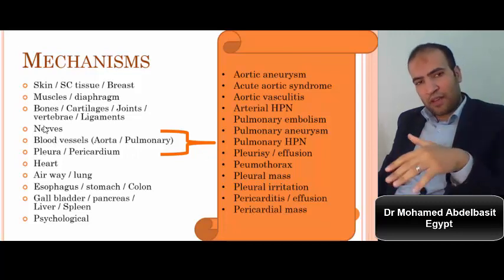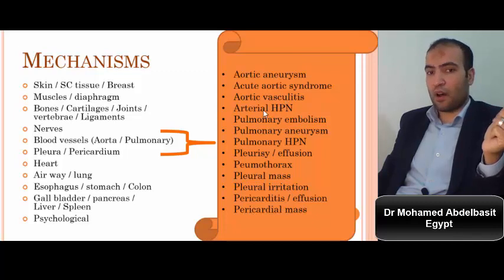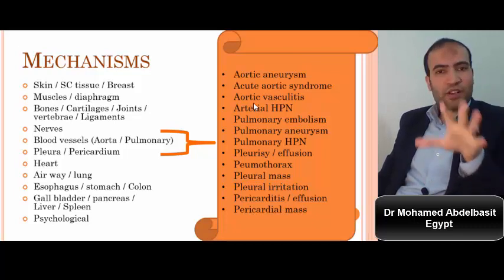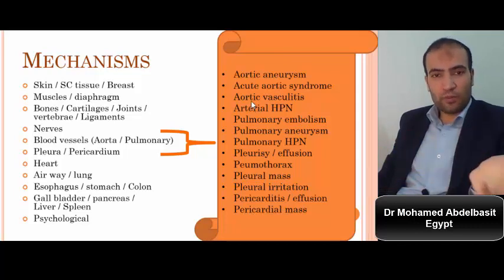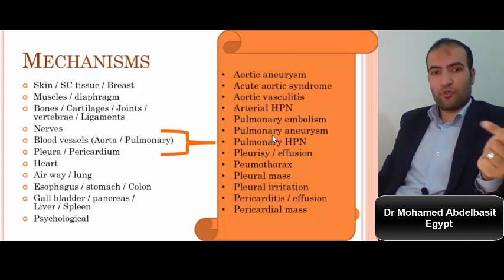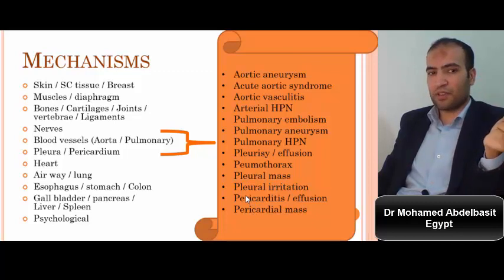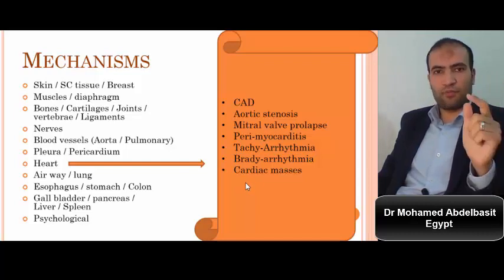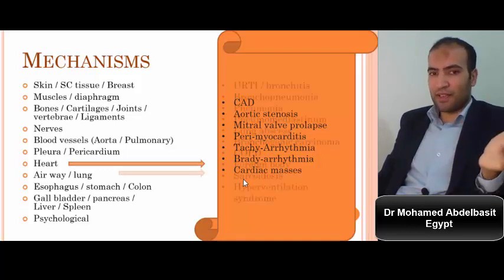From the vascular side: aortic aneurysm, acute aortic syndrome, vasculitis, and hypertension per se could cause chest pain — when performing coronary angiography it is normal, and after controlling blood pressure the chest pain resolves. Pulmonary embolism, pulmonary arterial hypertension, pleurisy, pneumothorax, pleural mass, pleural irritation, pericarditis, pericardial mass. From the heart: coronary artery disease, aortic stenosis, mitral valve prolapse, pericarditis, tachyarrhythmia, bradyarrhythmia, cardiomyopathy.